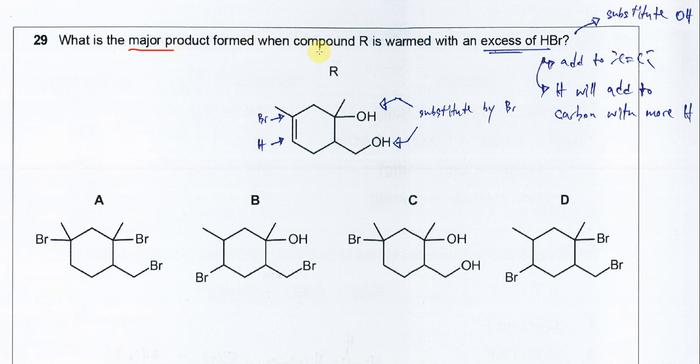When compound R is warmed with excess HBr, this HBr can undergo two reactions. It can add to the C=C double bond here, and at the same time it can substitute the OH groups here.